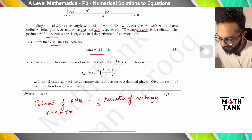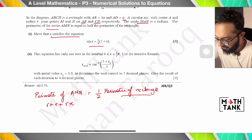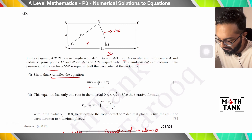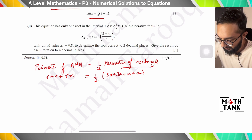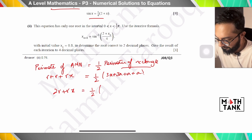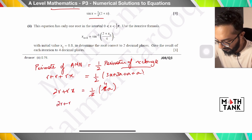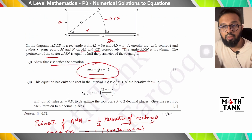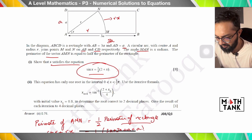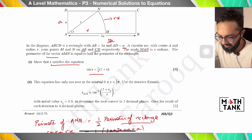The arc length is rx, so the perimeter of sector AMN = r + r + rx = 2r + rx. The perimeter of the rectangle is 3a + 3a + a + a = 8a, and half of that is 4a. So 2r + rx = 4a. I don't want r's or a's in my final equation, only x. Since sin x = a/r, we get a = r sin x.